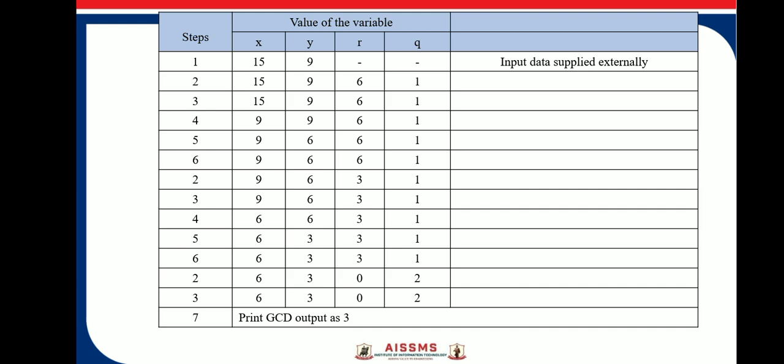Now here, remainder is 6, which is not equal to 0. So therefore, go to step 4. Step 4 is, assign Y to X. So here, X is nothing but 9 and step 5 is, assign R to Y. So step 5 is 6.